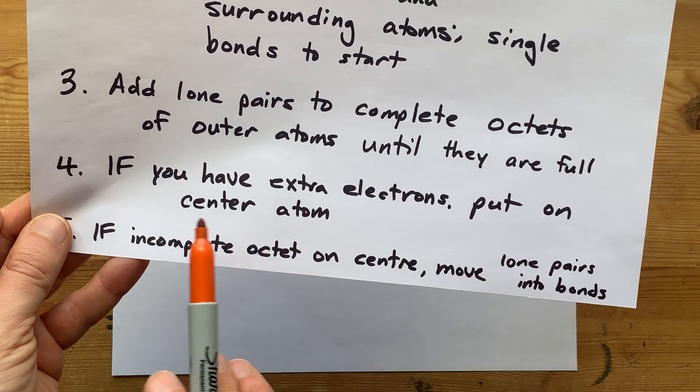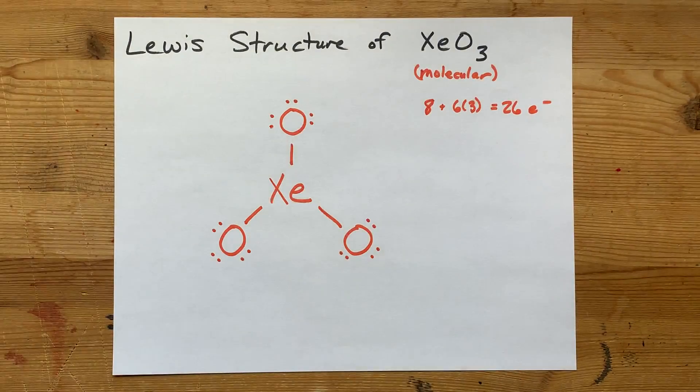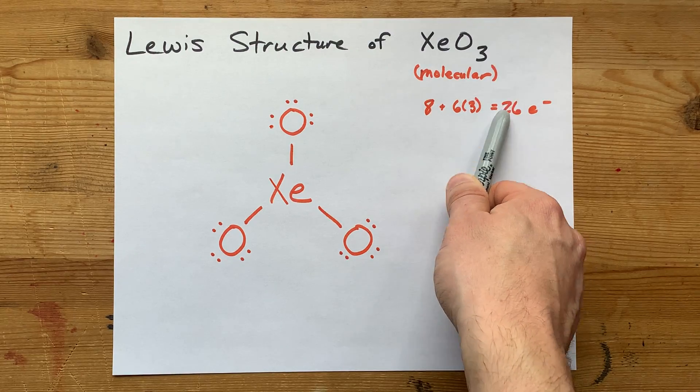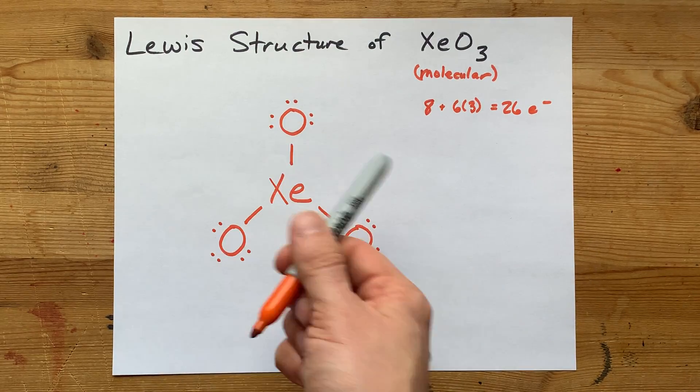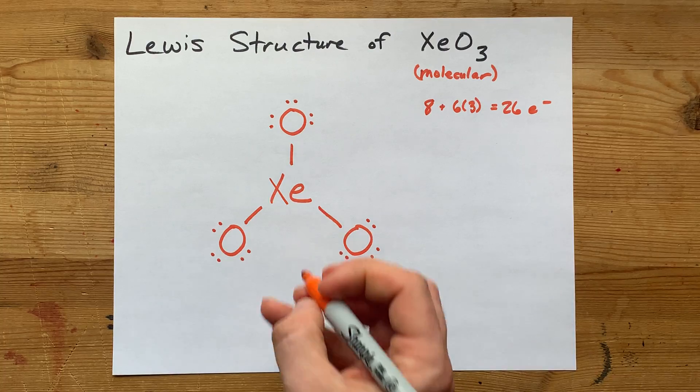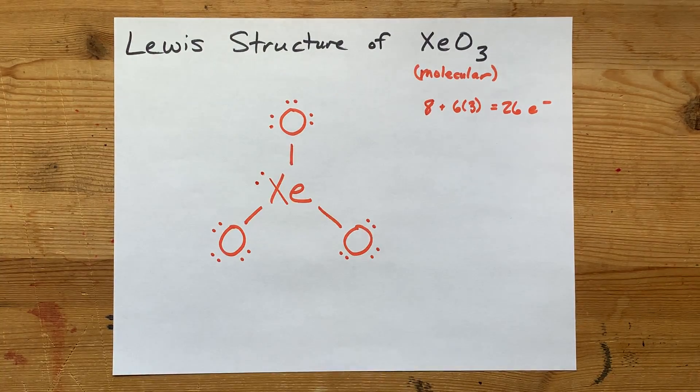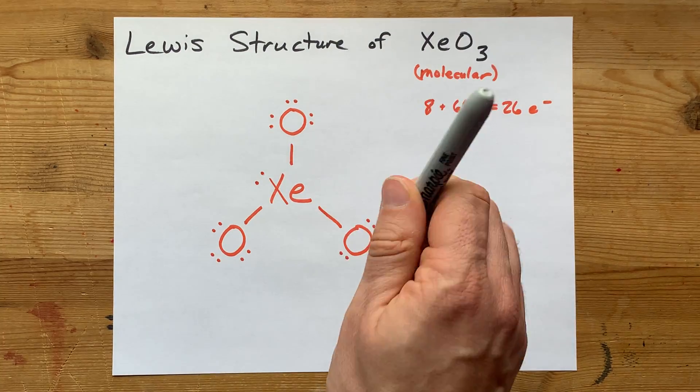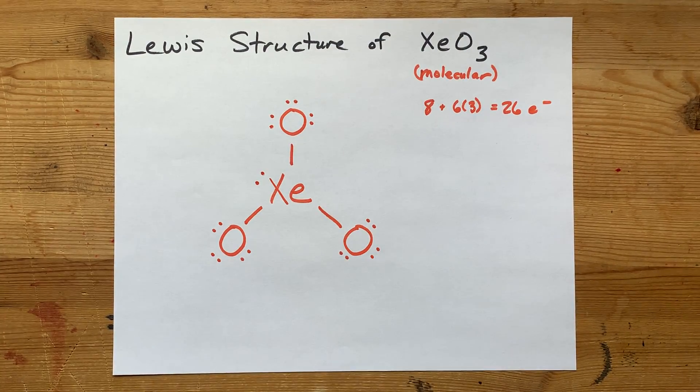If you have extra electrons, we're going to put them onto the central atom. I do have extra electrons. In fact, I need 26, and I only have 24. So I'm going to jam a lone pair onto that central atom. Now I have 25, 26. That's the number of electrons that I need.